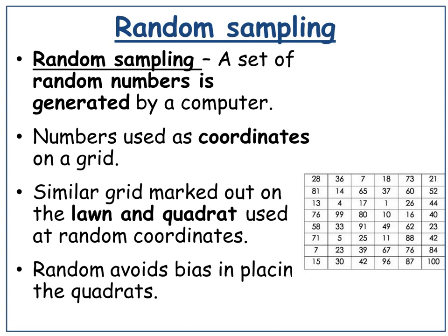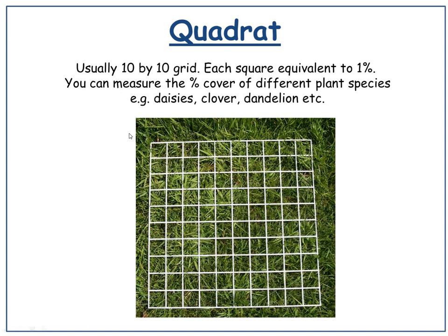Random sampling is where you get a set of random numbers generated by a computer. The numbers are used as coordinates on a grid, you mark out a similar grid on the lawn, and the quadrat will be dropped at the random coordinates — all about avoiding bias in placing the quadrats. Here is a quadrat: usually a 10 by 10 grid, that would usually be a metre by a metre. Then you would count the percentage cover of each species of plant. If a square is covered in that particular plant, that would be 1%. Obviously this one is just 100% covered with grass, because all 100 squares are full of grass.